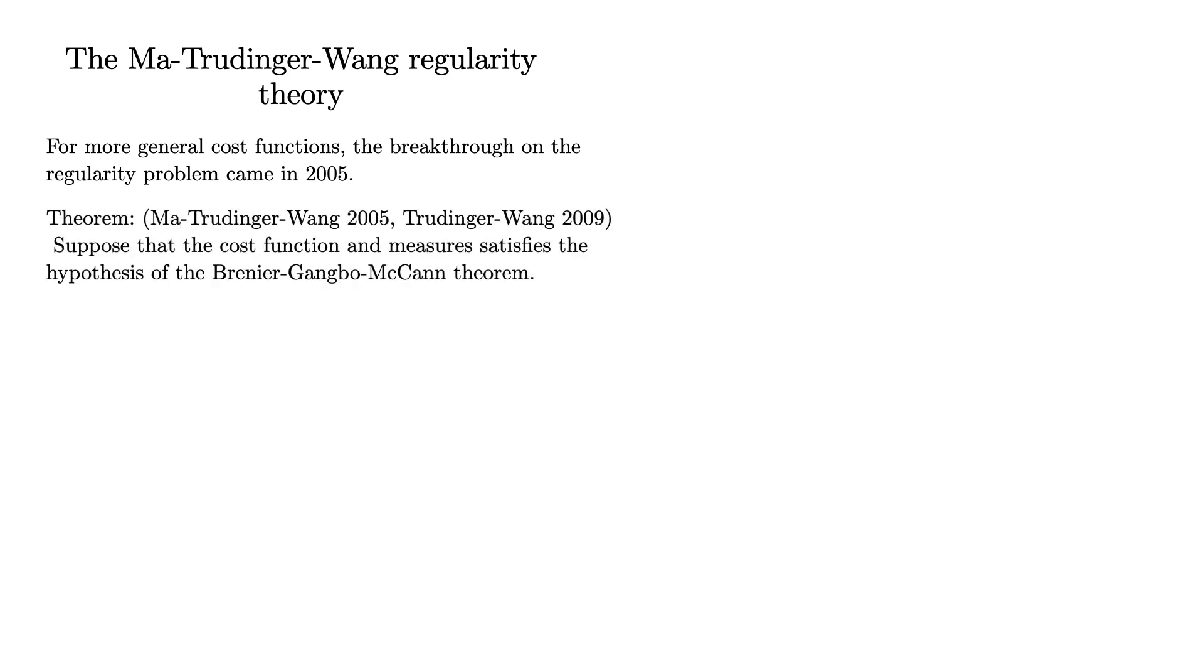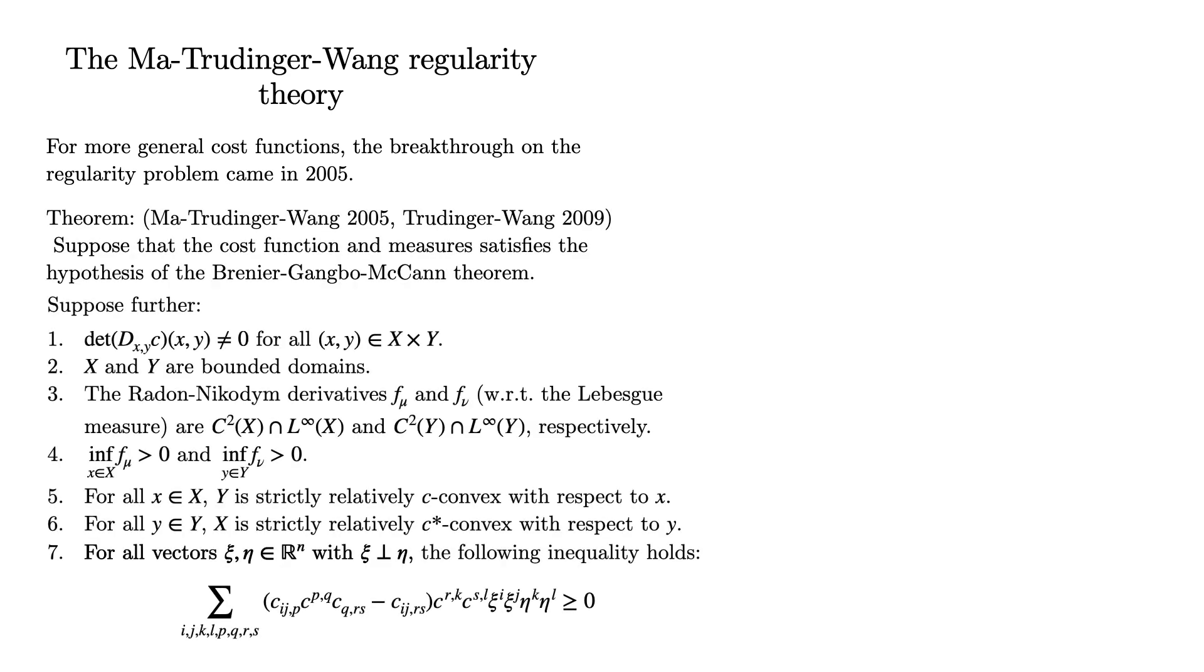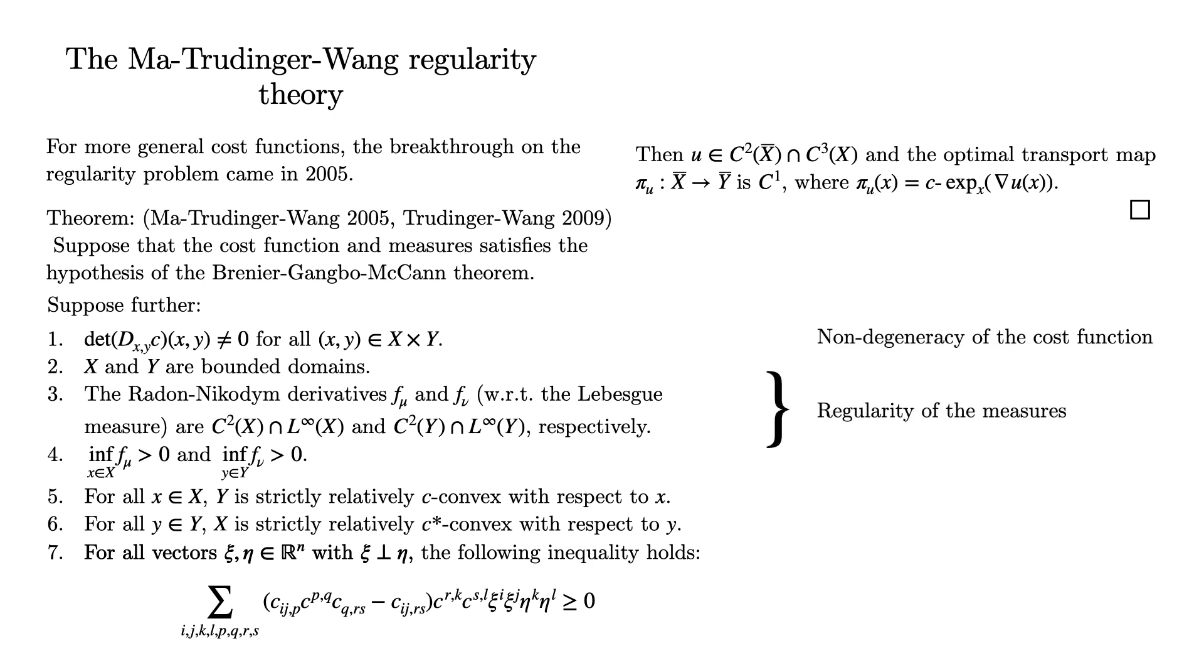Then, in 2005, a breakthrough was found by Ma, Trudinger, and Wang. In particular, they found conditions on the cost and measures to ensure that the transport is continuous. As you can see, this is a very technical theorem. However, from a high-level perspective, we can summarize it as follows. If the cost function is non-degenerate, the measures are sufficiently smooth, the domains X and Y satisfy some type of convexity condition, and the so-called MTW or MTW0 condition holds, then the transport is continuous.